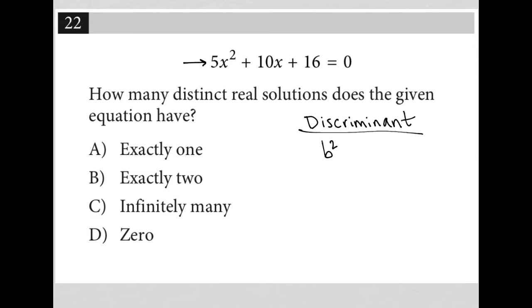The discriminant is b squared minus 4ac. And basically when we plug our values for a, b, and c into this formula, we can then figure out whether or not this is equal to zero, less than zero, or greater than zero. And in each case, we have different possibilities for the number of distinct real solutions.